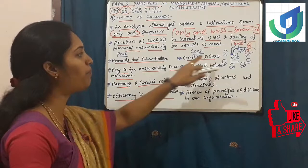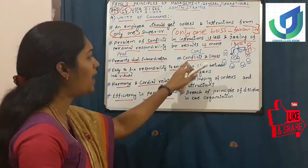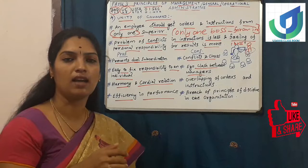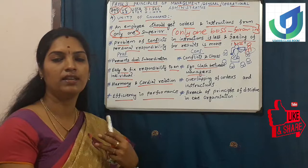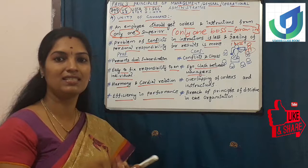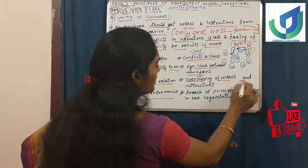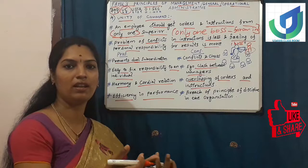This situation happens when we are not following only one boss's instruction. The next con is ego clash between managers. Egoism will start among the superior members. When two or three bosses give instructions and employees respond saying 'he told like that, you are telling like that,' the managers themselves will have ego clashes, which reduces efficiency.